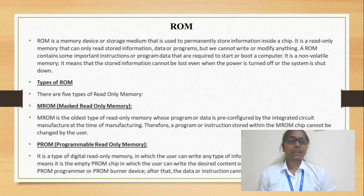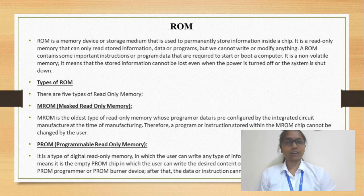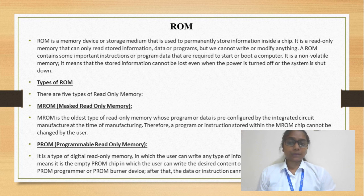The second type of primary memory is ROM, which stands for Read Only Memory. This data is permanently stored. This is a non-volatile type of memory — if we remove the power supply, we cannot erase our data. This is a Read Only Memory, meaning we cannot write or re-program it.